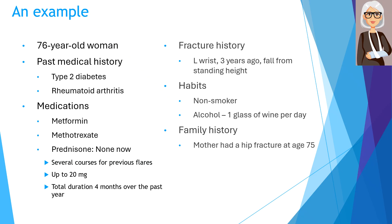In this sample case, we have a 76-year-old woman with a past medical history of type 2 diabetes and rheumatoid arthritis. She is presently taking metformin and methotrexate. She is currently not taking any prednisone; however, she has had to take several courses of prednisone in the past for flares of her rheumatoid arthritis. She was taking prednisone for about 4 months in the past year at a dose of up to 20 mg daily.